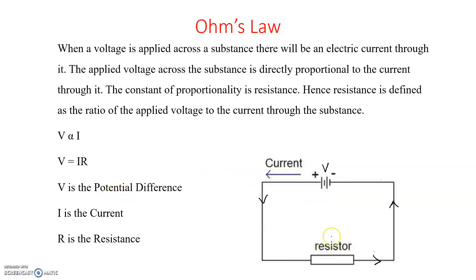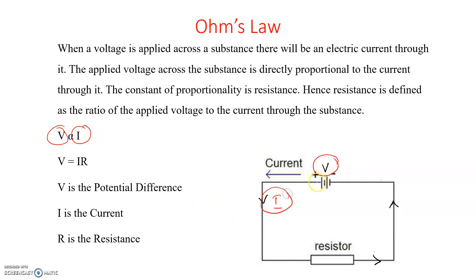Ohm's Law: Consider a resistor connected across a voltage source. When a voltage is applied across the resistor, there will be a current flowing through it. The applied voltage across the substance is directly proportional to the current flowing through it. The proportionality constant is represented by resistance. So V is equal to IR. This is Ohm's law — the applied voltage is directly proportional to the current flowing through it. V is the potential difference between two points, I is the current in amperes, and R is the resistance in Ohms.